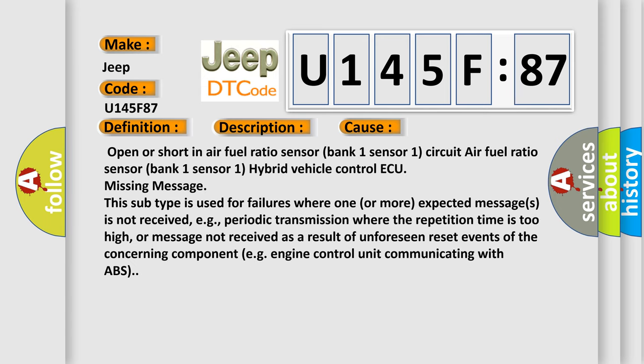Open or short in air fuel ratio sensor bank 1 sensor 1 circuit. Air fuel ratio sensor bank 1 sensor 1. Hybrid vehicle control AQ missing message. This subtype is used for failures where one or more expected messages is not received.